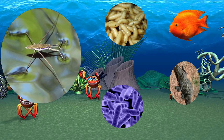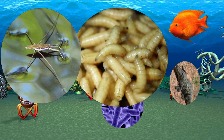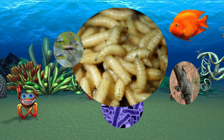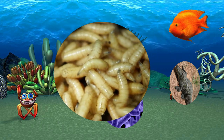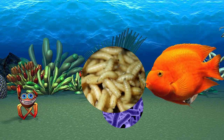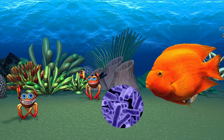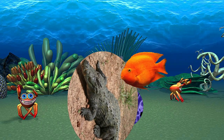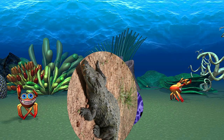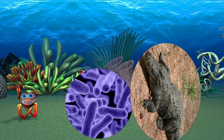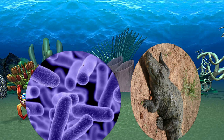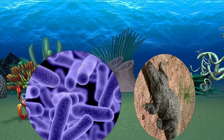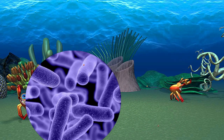Insects eat plants and they are food of lava. Fishes eat lava and grow. Crocodile majorly depends on fish for food. After the death of the crocodile, its body gets decomposed by microorganisms and increases the fertility of soil, which again helps in growth of the plant.